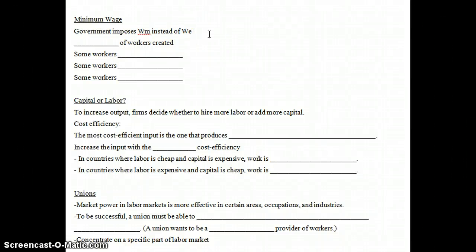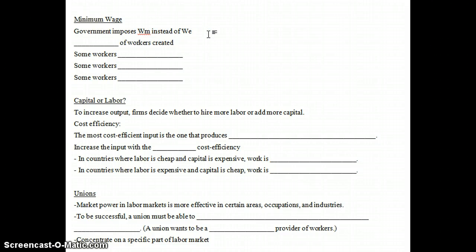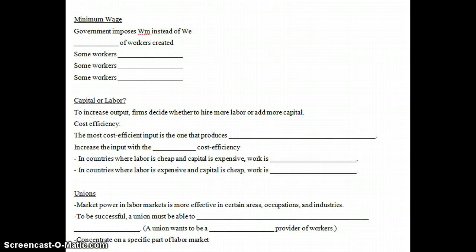The second part of the two chapters for this week covers the minimum wage and the impact of unions. We left off talking about labor markets — what the demand for labor and the supply of labor look like, and how changes in the wage rate impact the amount that employers want to hire. Suppose that the government were to impose some higher minimum wage or wage restriction than the market says is efficient.